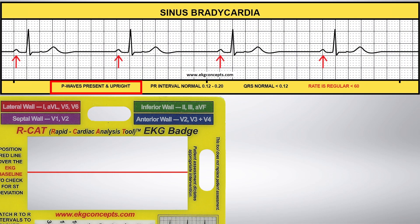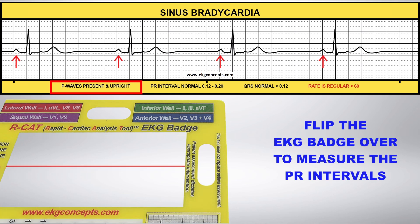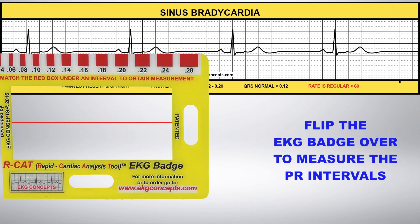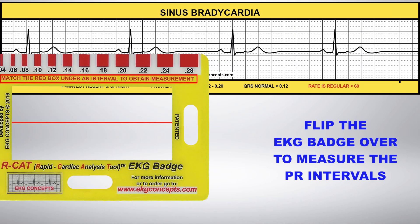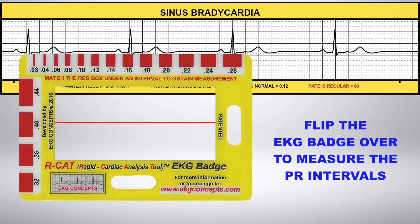Notice that all of the P waves are present and upright. Now flip the badge over to measure the PR intervals using the calibrated red boxes. The PR interval is consistently .20, within the normal range of .12 to .20.